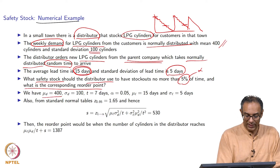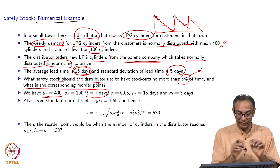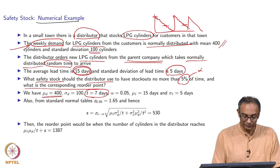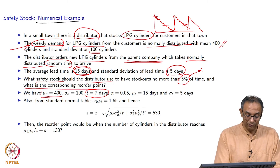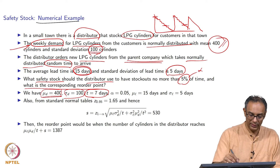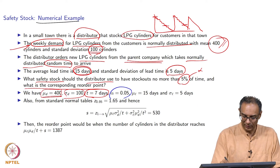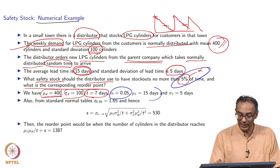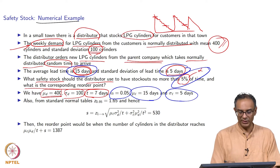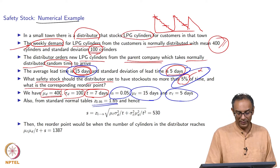Let us put down the numbers. The demand cycle t is 7 days (weekly demand). Mean demand μ_d = 400, standard deviation σ_d = 100. Alpha = 0.05. Mean lead time μ_l = 15 days, standard deviation of lead time σ_l = 5 days. From a standard normal table or using norminv(0.95) in Octave, z(0.95) = 1.6449, approximately 1.65.